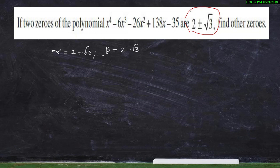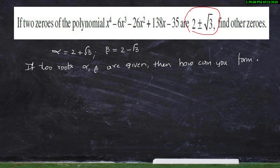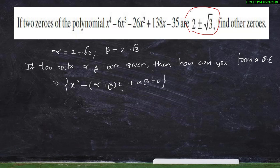Now, if two roots are given, how can you form a quadratic equation? If two roots alpha and beta are given, you can form a quadratic equation using: x² - (α + β)x + αβ = 0.